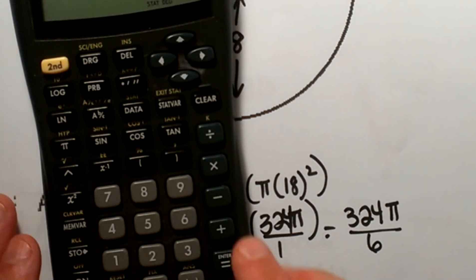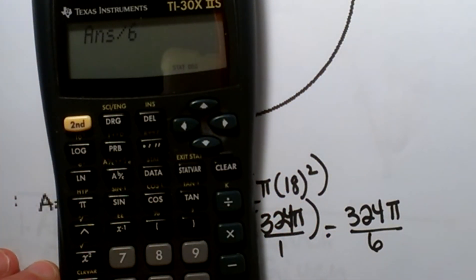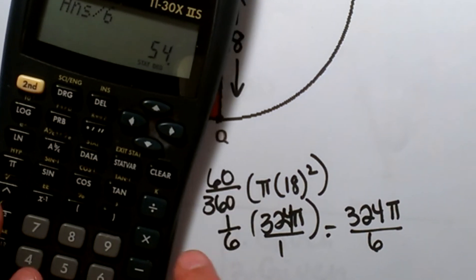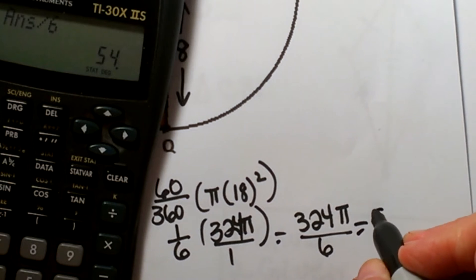So I am ending up just dividing 324 divided by 6. So that ends up being 54 pi, and that gives us the area of the sector.